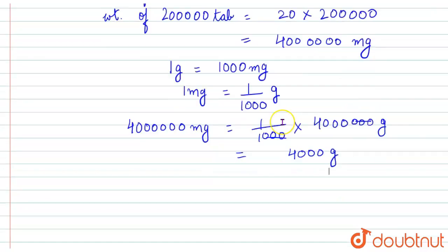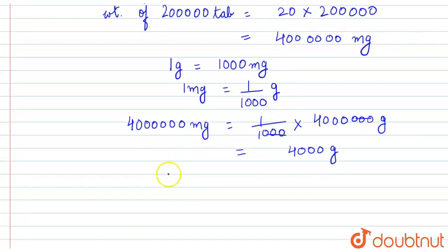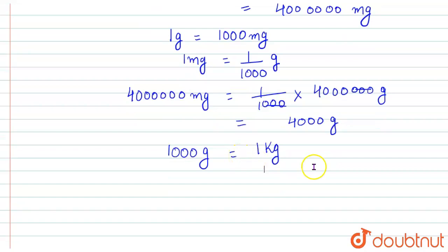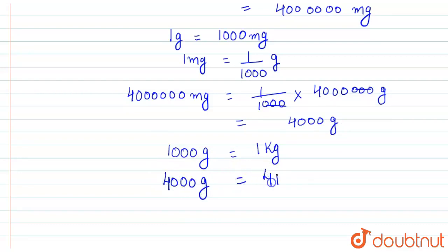We also know that one thousand grams is equal to one kilogram. So if one thousand grams is equal to one kg, then four thousand grams is going to be equal to four kilograms.